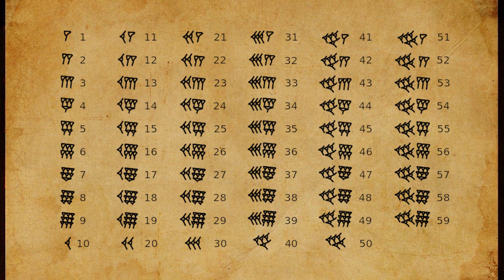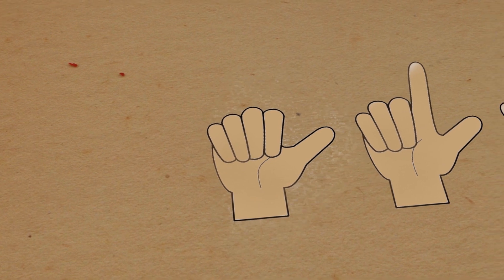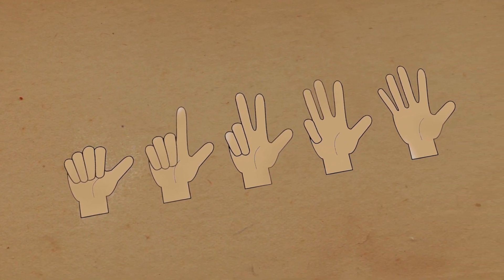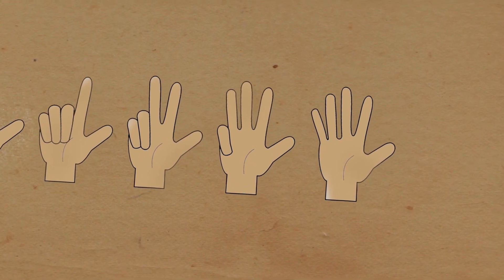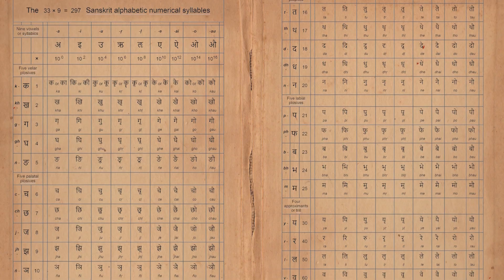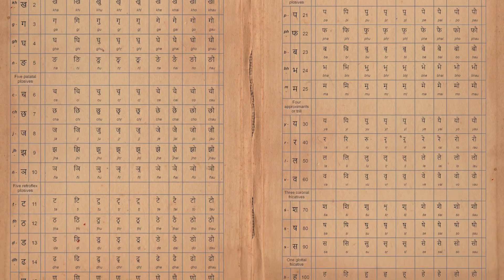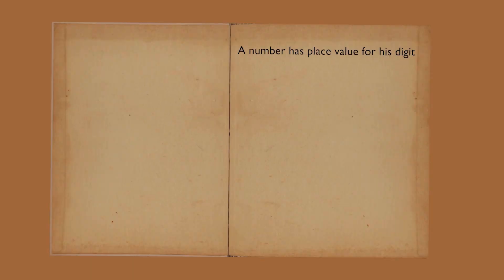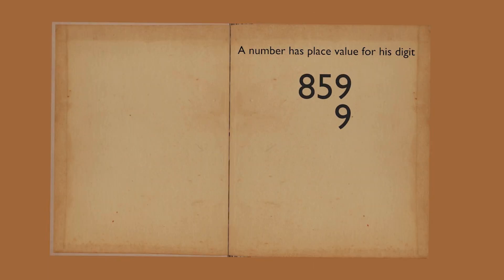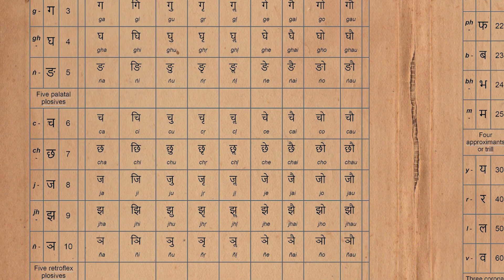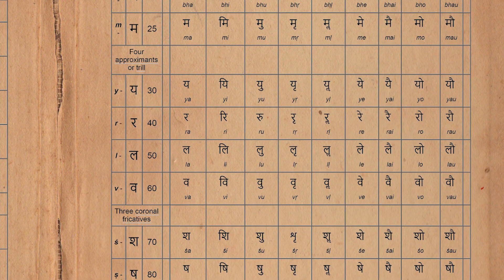Aryabhata thought that if there was a number system which people can count on their fingers, it would be easy to use physically and also for sign language, because people can show numbers with their fingers. So he introduced a positional number system in base 10, stating that a number has a place value for its digits. For example, in 1859, 9 has the ones position, 5 has the tens position, and 8 has the hundreds position. In this system he introduced 0 as a placeholder, but he had not yet used a symbol for 0.